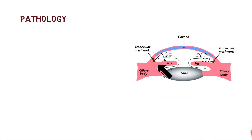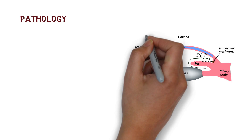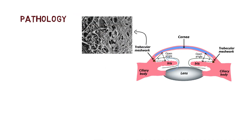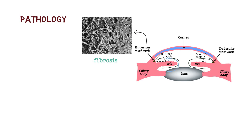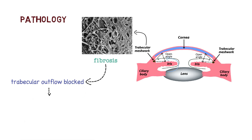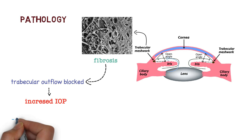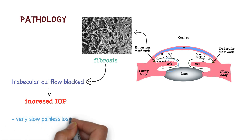Let's talk about the pathology. Due to some pathological conditions, there is resistance in the flow of aqueous humor through the trabecular meshwork. Due to this resistance, there is gradual fibrosis, which blocks the trabecular outflow. That's why there is increased intraocular pressure, and this gradual fibrosis causes very slow and painless loss of vision.